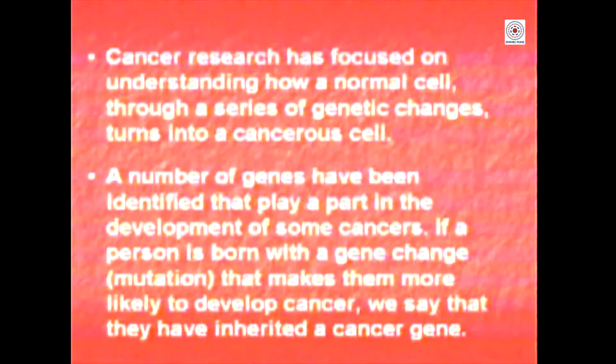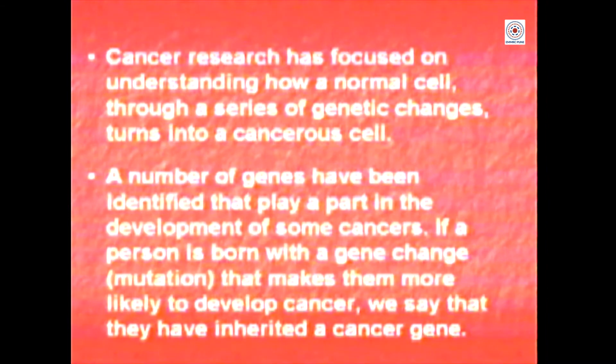Cancer research has focused largely on understanding how the normal cell works, how its growth and development is regulated, and how by a set of genetic changes you can convert it into a cancer cell. A large set of genes have been identified, studied, cloned, characterized, and the processes which lead to initiation, progression, and subsequent development into metastasis are being very elegantly worked out. There are certain changes happening without prior history, and there are certain changes with a predisposition — those cancers with a predisposition are said to have an inheritance passed on from parents to children.